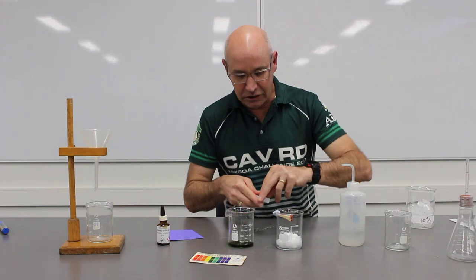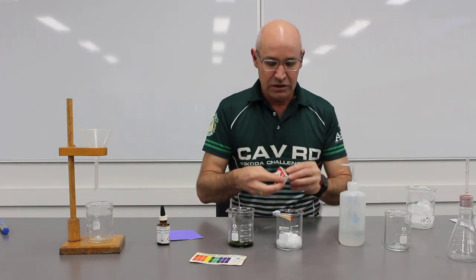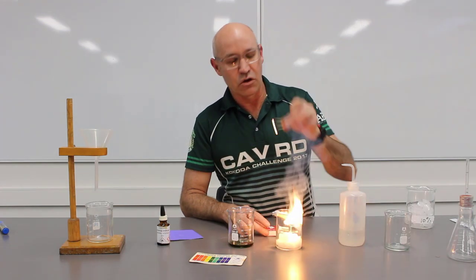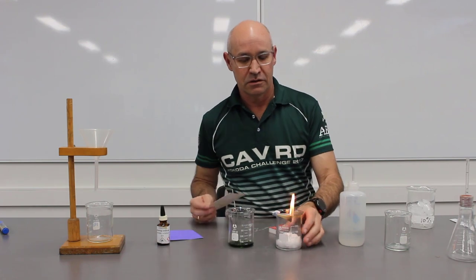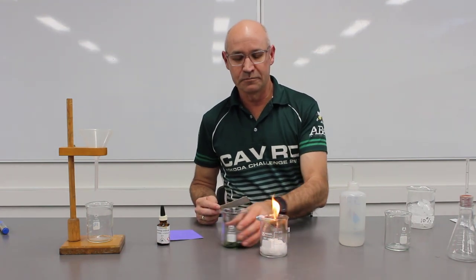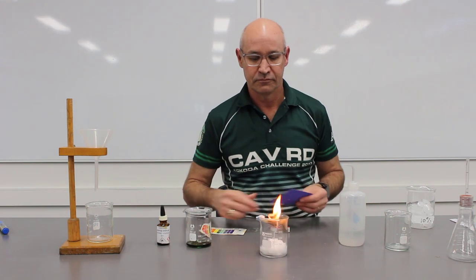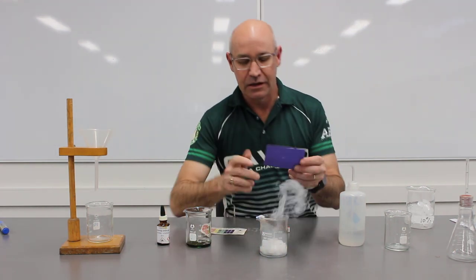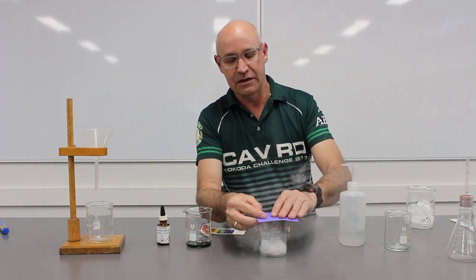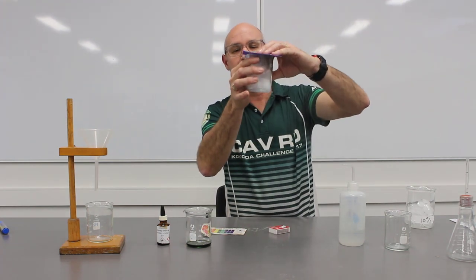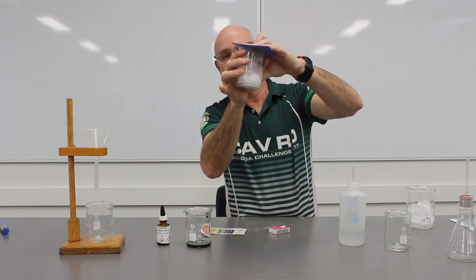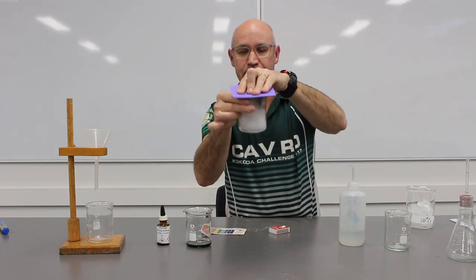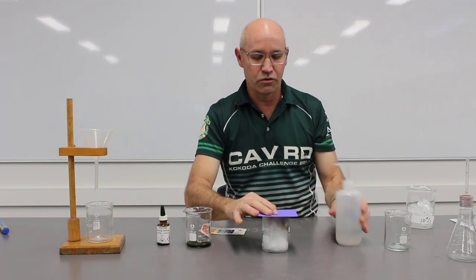I'm going to put some distilled water into some cotton wool. Now I'm going to produce some carbon dioxide by burning some matches. I'll let them burn for a little while, blow them out, and capture all of that smoke — mainly interested in the carbon dioxide. I'll let that all absorb and add a little bit more water.